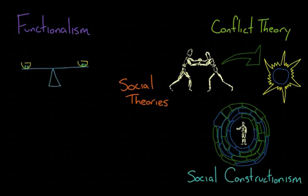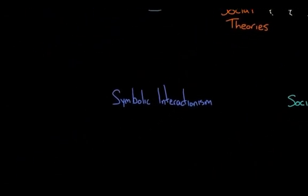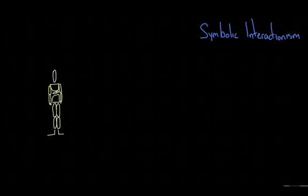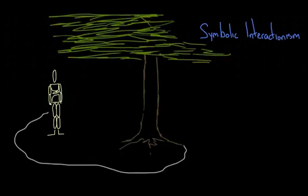The final social theory here is symbolic interactionism. This one is kind of different than the other theories because it puts a lot of focus on the individual and how they behave. It is based around the idea of the meanings we give to things. Like to me a tree could be a source of shade whereas for someone else it could be the home to spiders and ants.